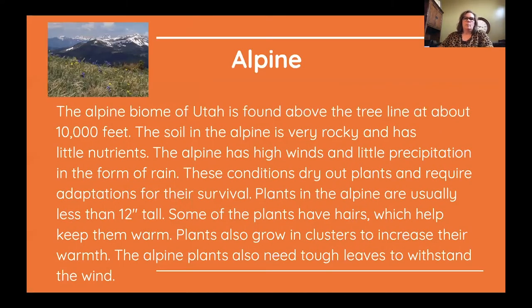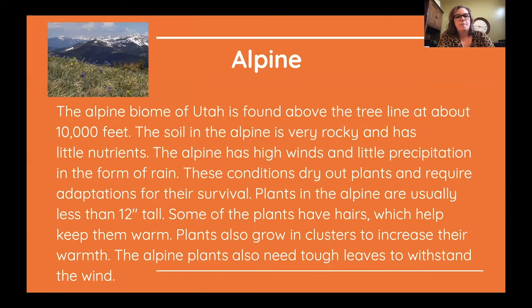The alpine biome of Utah is found above the tree line at about 10,000 feet. The soil in the alpine is very rocky and has little nutrients. The alpine has high winds and little precipitation in the form of rain, so these dry conditions require adaptations for survival. Plants in the alpine are usually less than 12 inches tall; some have hairs which help keep them warm. Plants also grow in clusters to increase warmth and need tough leaves to withstand the wind.